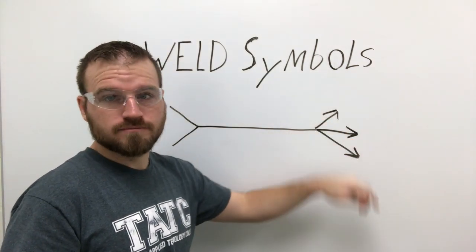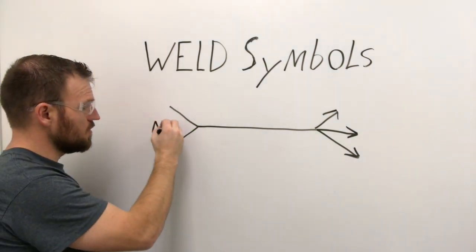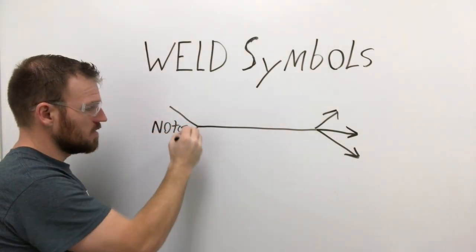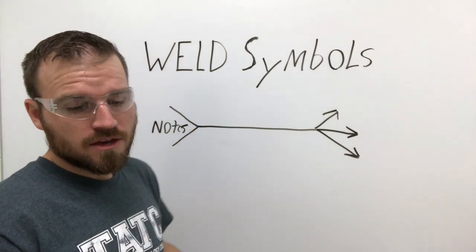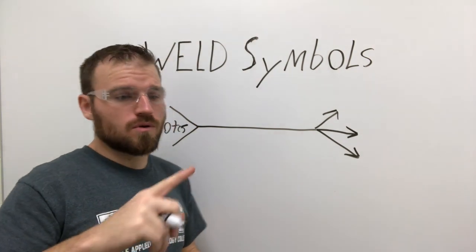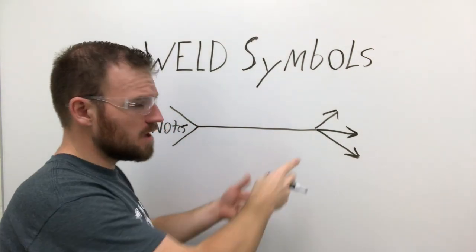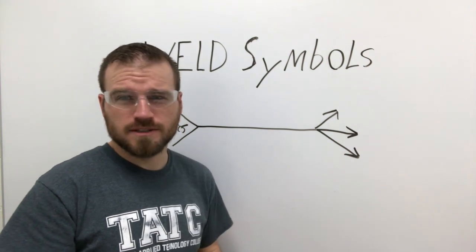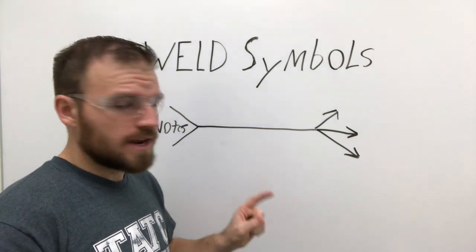The tail here on the back will be filled with notes. This could be things like 'see detail one,' or it could be the WPS that is required for this weld. It could be the type of weld that's going to be done, or it could be the type of stick or something like that.